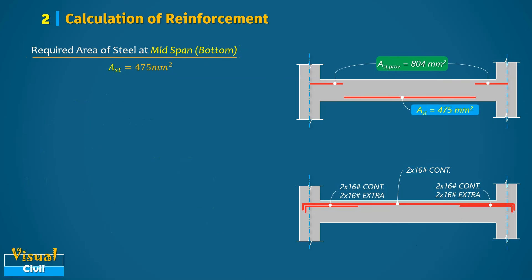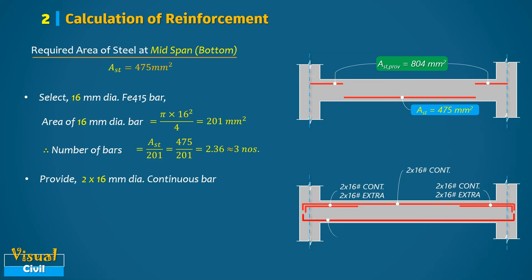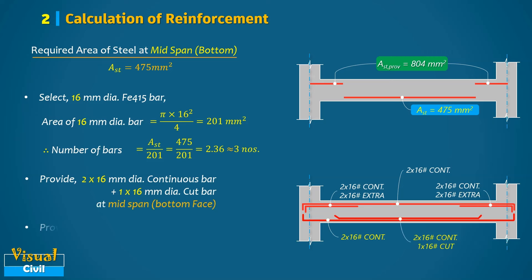Next, let us determine the number of bars at the mid span of the beam. We select 16 mm diameter bars, which means we need approximately three bars. Therefore, we provide two continuous bars and one curtail bar at the bottom, resulting in a total steel area of 603 mm².